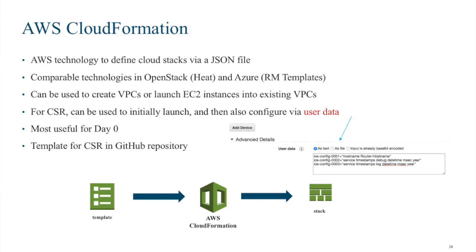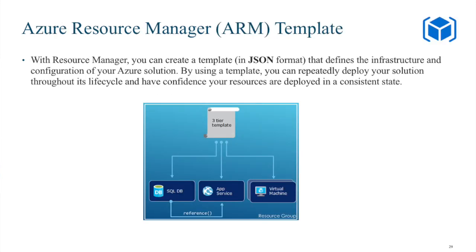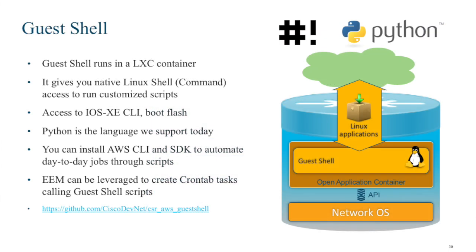On automation: for AWS we use CloudFormation templates for transit VPC, scale-out, and Lambda-based configs — all available to customers, who can also create their own. For Azure, the Azure Resource Manager template is available for scripting and automation. Additionally, on the CSR itself we're enabling guest shell — you can run scripts inside an LXC container in IOS, monitor APIs, and execute CLI commands on the spot. So you can program either at the cloud infrastructure level or directly on the CSR itself.